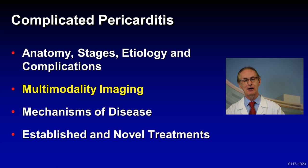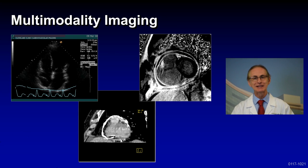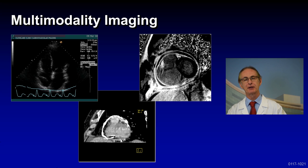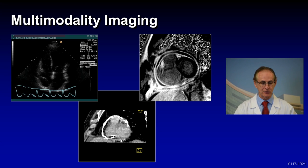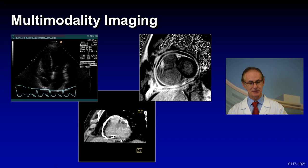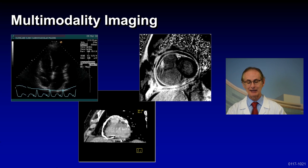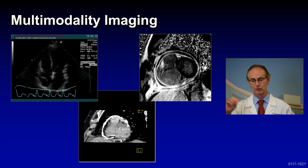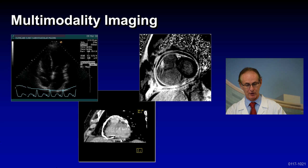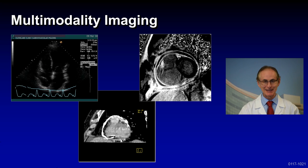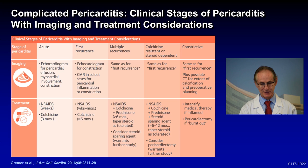Now let's turn to multimodality imaging. Here's an example of how it can be used in complicated pericarditis. The echocardiogram shows the septal bounce of constrictive pericarditis. On the far right, you can see an MRI showing inflammation of the layers of the pericardium with late gadolinium enhancement — it looks like a reverse Oreo cookie, with black on the inside and two white layers around the heart. The bottom panel shows a CT scan demonstrating calcium all around the heart.